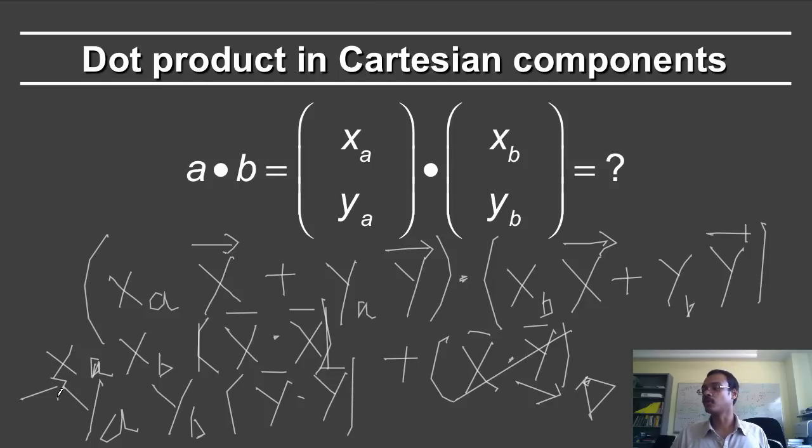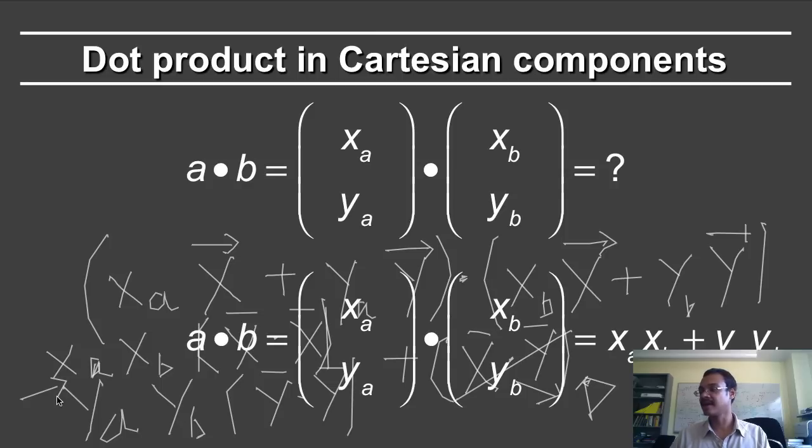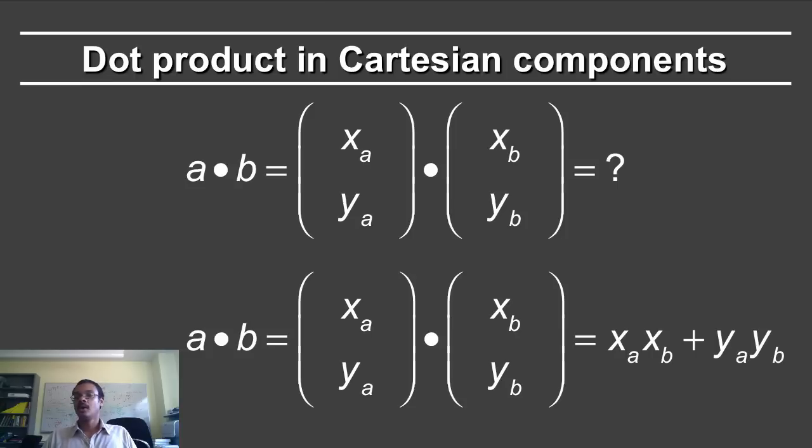And of course, if you could not quite follow my handwriting, I again have the equation on the next slide, where a dot b is equal to the dot product of xaya and xbyb. And this is simply equal to xaxb plus yayb. Very simple.